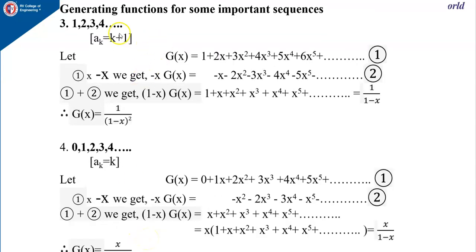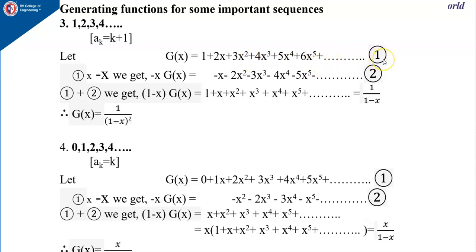Next, suppose the sequence is 1, 2, 3, 4, and so on — that is, ak equals k plus 1, so a0 equals 1, a1 equals 2, and so on. Let g(x) equal 1 plus 2x plus 3x² and so on. Let us call this equation 1.